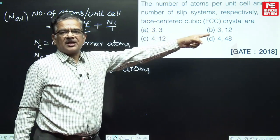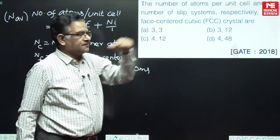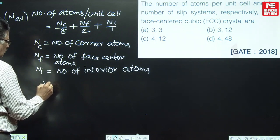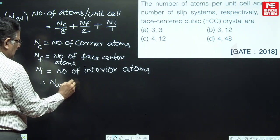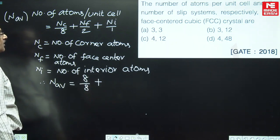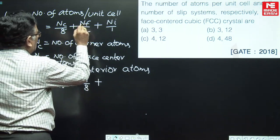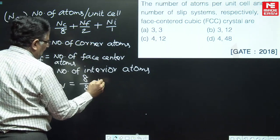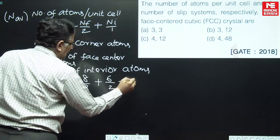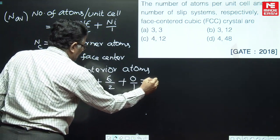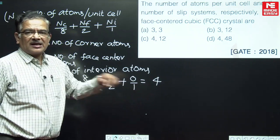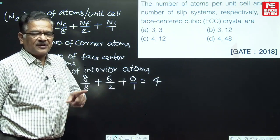Since the question is asking about FCC structure, we substitute the values: number of corner atoms is 8 divided by 8, plus number of face-center atoms is 6 divided by 2, plus number of interior atoms is 0 divided by 1. That amounts to 4. So the number of atoms per unit cell of FCC is 4.